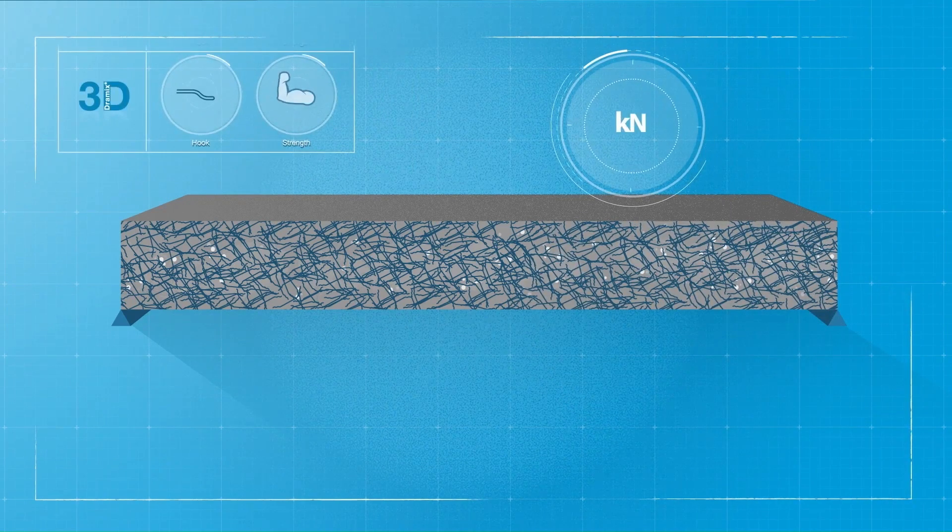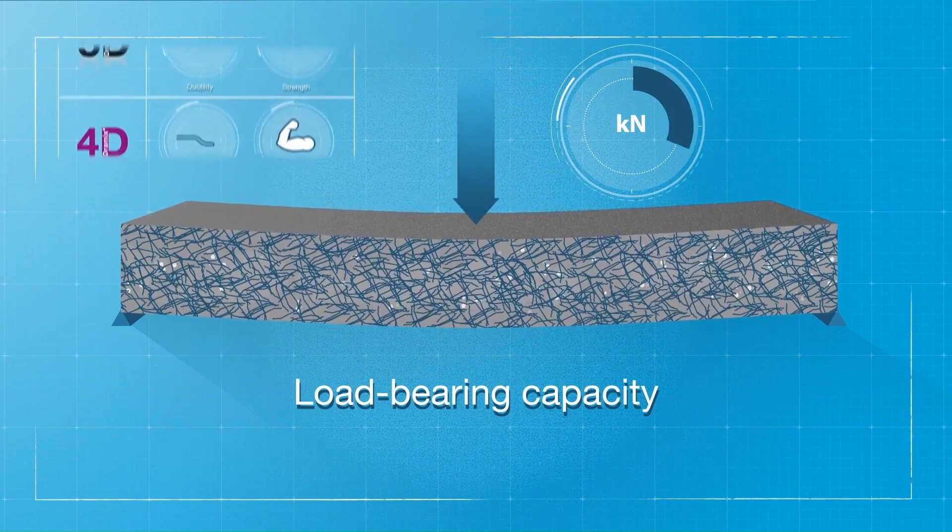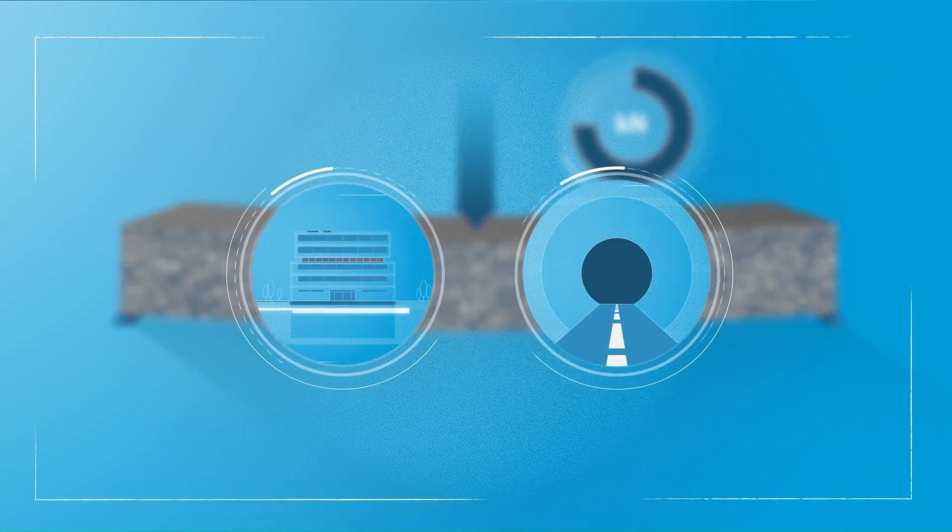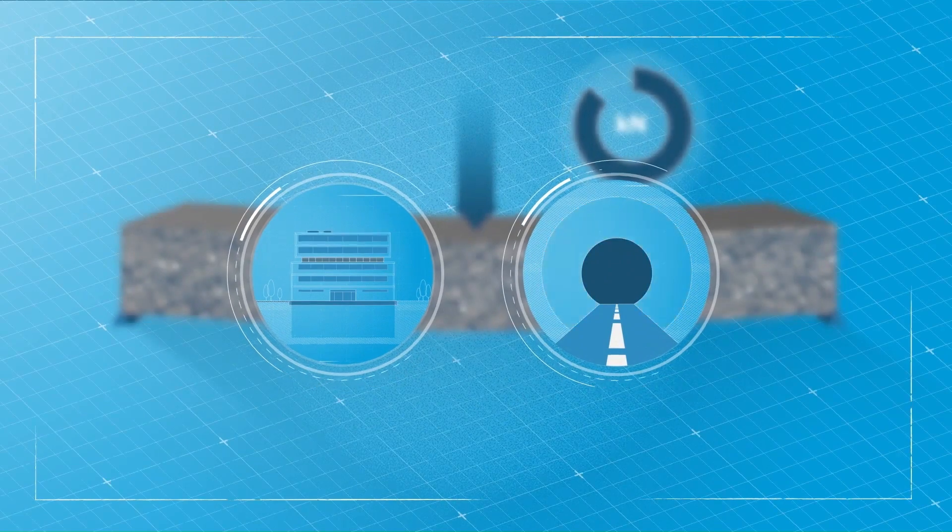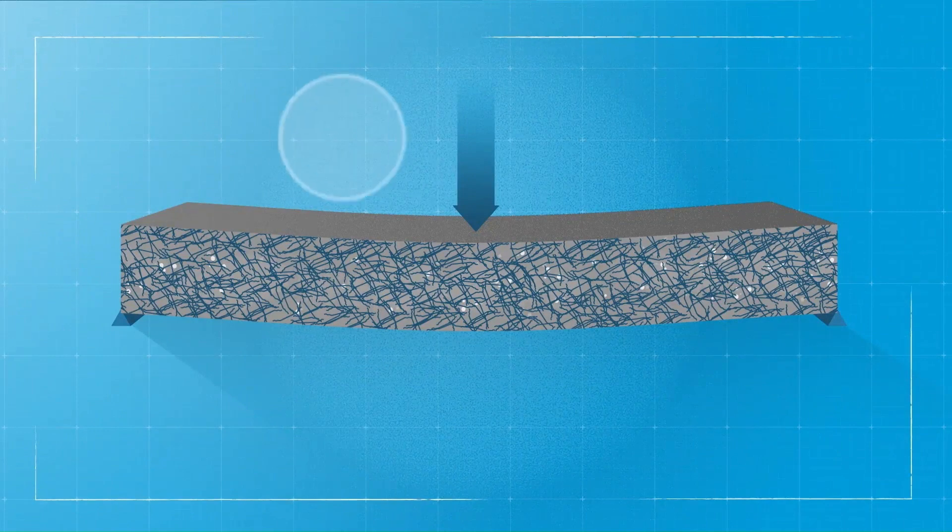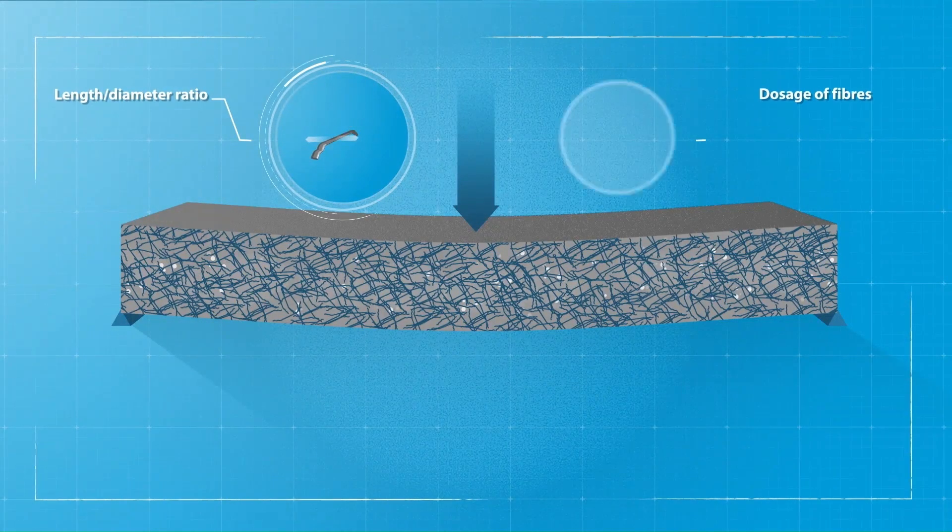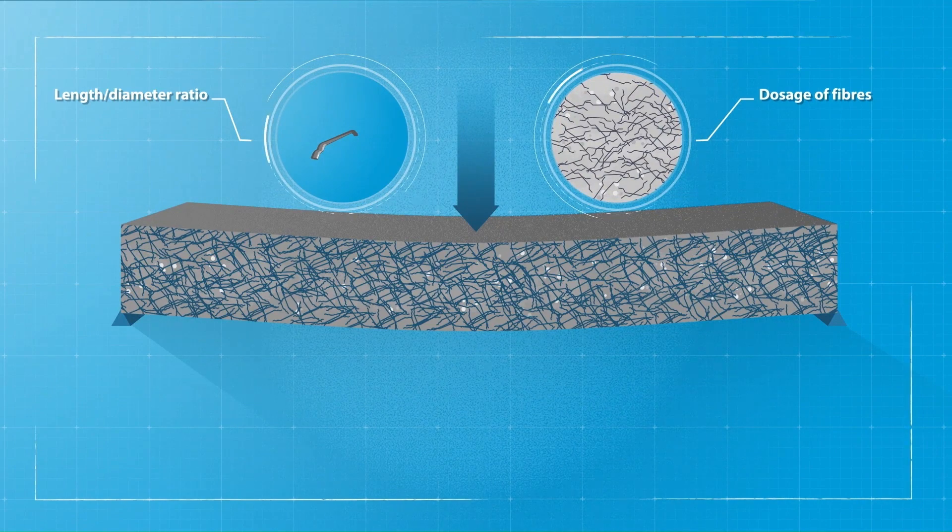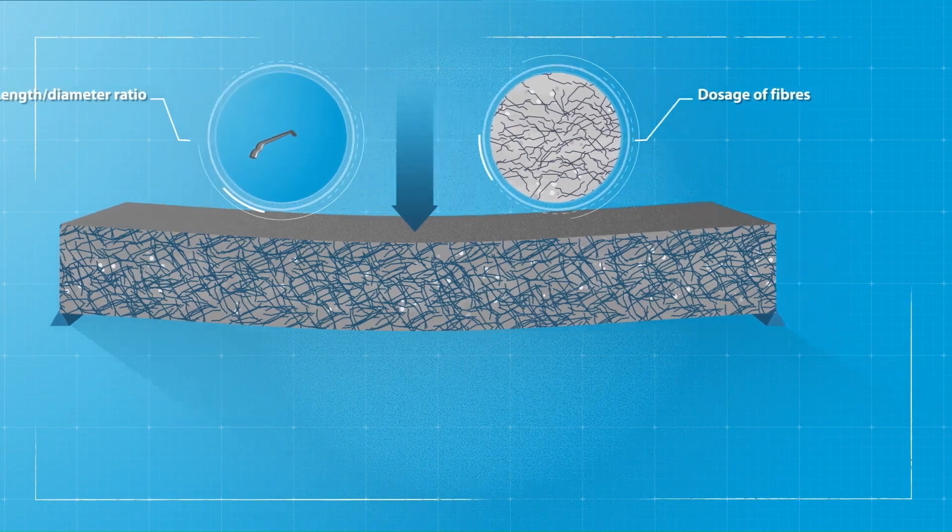we can conclude that Dramex steel fibers effectively increase the load-bearing capacity of concrete. It can be used in almost any concrete structure with or without additional reinforcement, where the ductility of your concrete structure depends on the length-diameter ratio of the fibers and the number of fibers used per cubic meter. It is essential that enough fibers overlap to create a continuous network in the concrete mix.